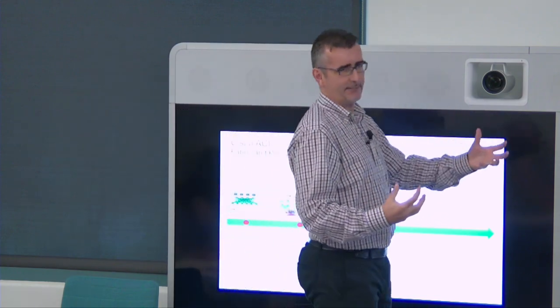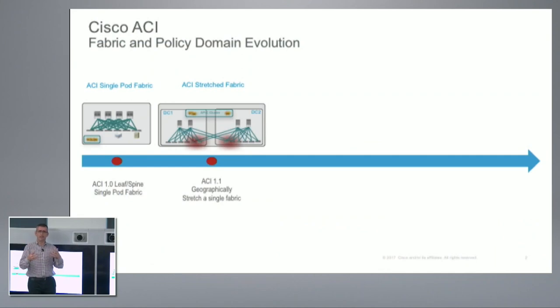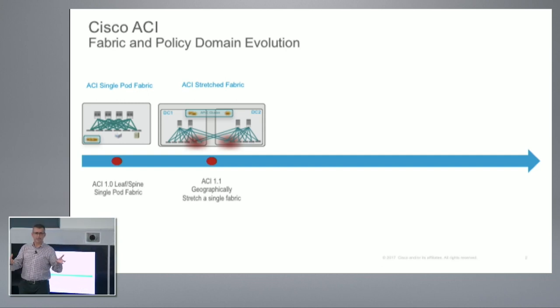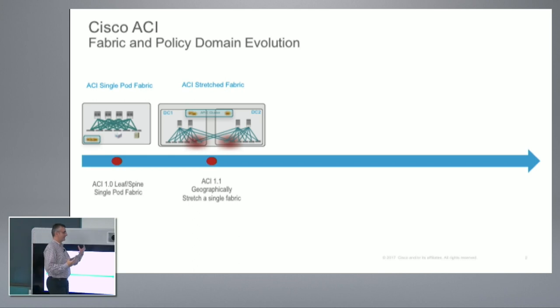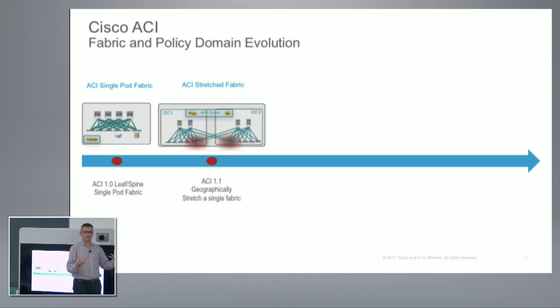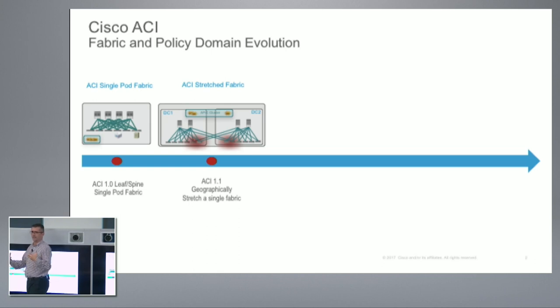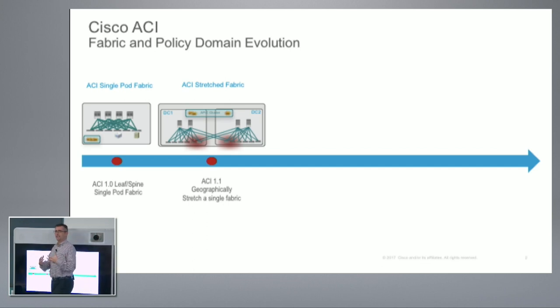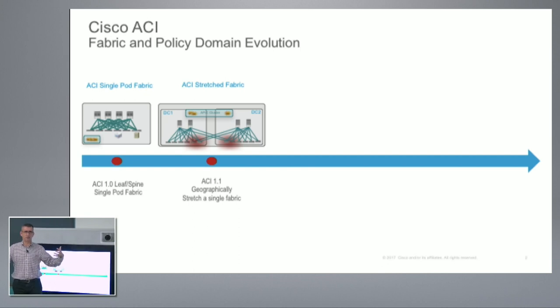Functionally, the stretch fabric was still a single pod. All the control plane protocols running in ACI — ISIS in the underlay, MPBGP, COOP — were running end-to-end across all the data centers. So the stretch fabric represented a single network fault domain. This raised concern because customers said: I manage them with a single APIC controller cluster, which is cool, but I have a network fault domain that spans across my data centers, which I don't like.